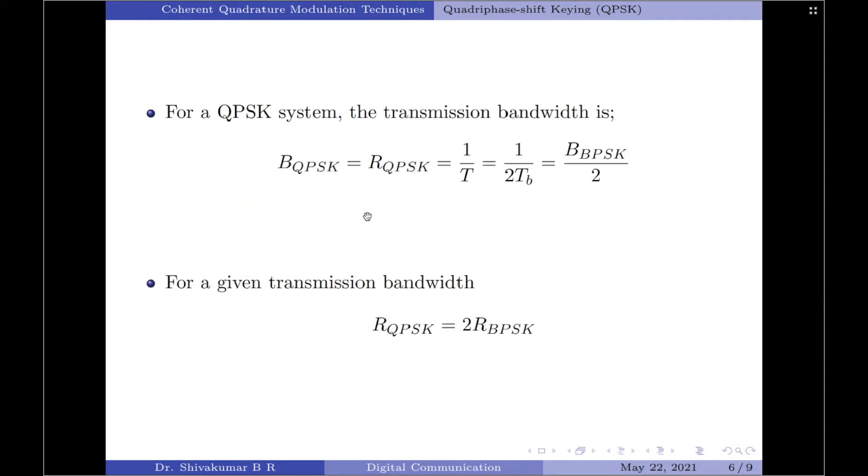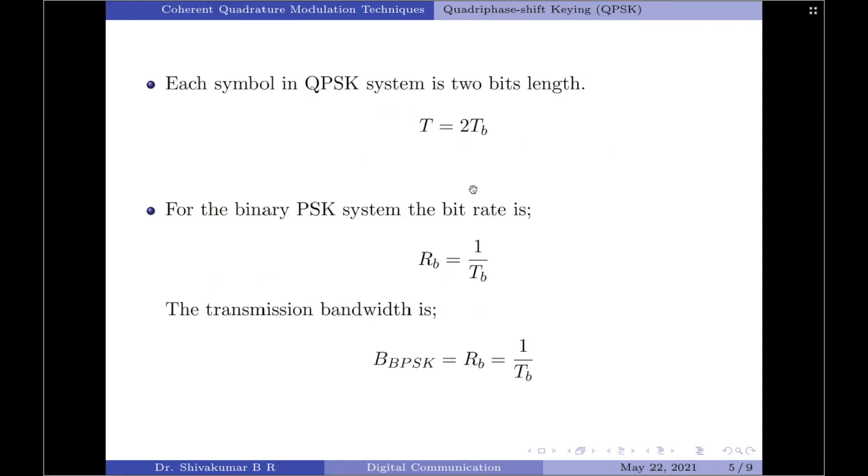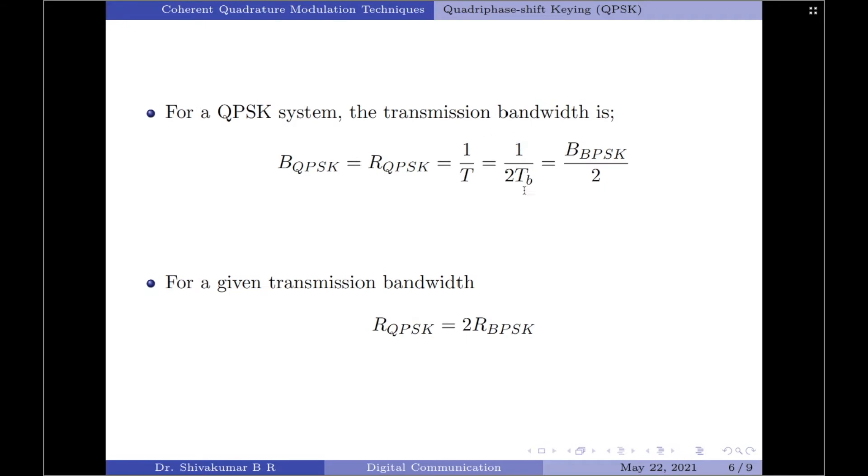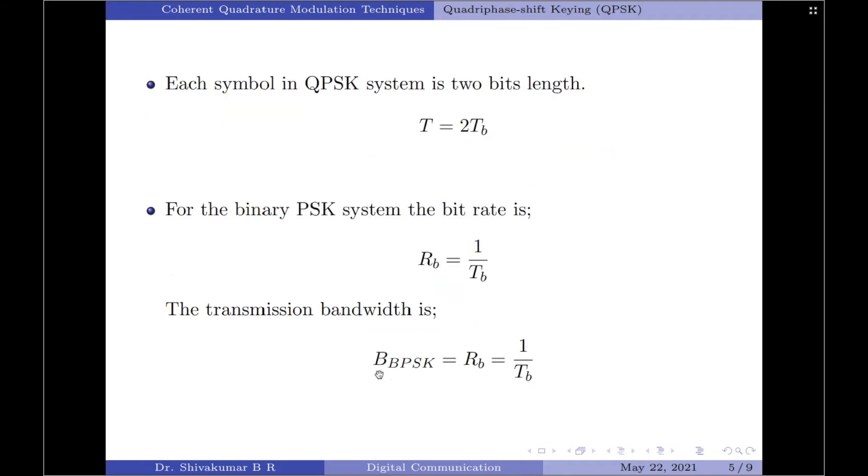In a QPSK system, the transmission bandwidth is given by BQPSK equals transmission rate RQPSK equals 1 divided by T. As per this equation, capital T equals 2Tb. I will substitute that here. And now, I will compare this equation with binary PSK bandwidth.